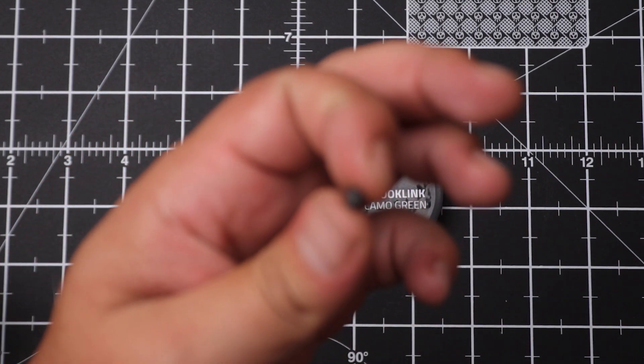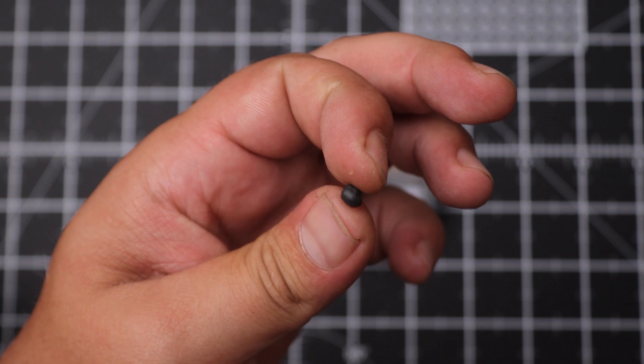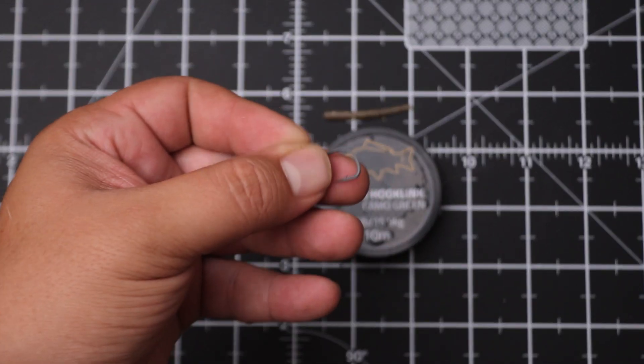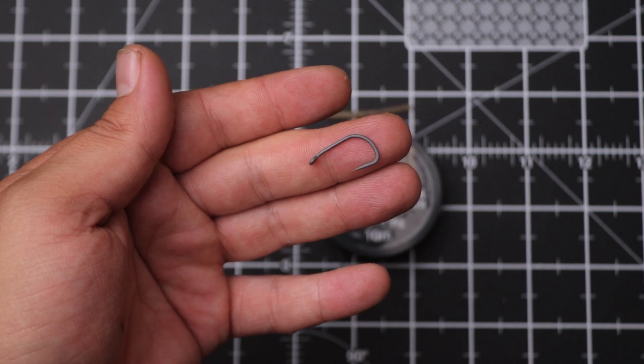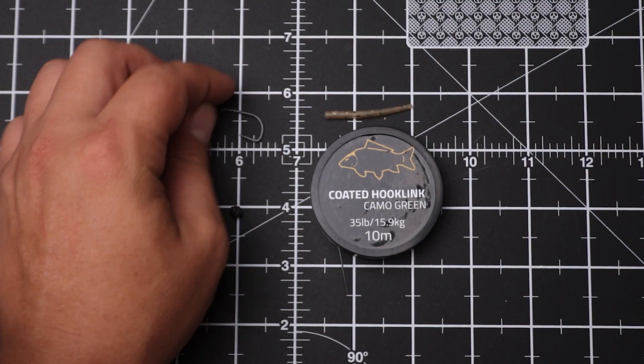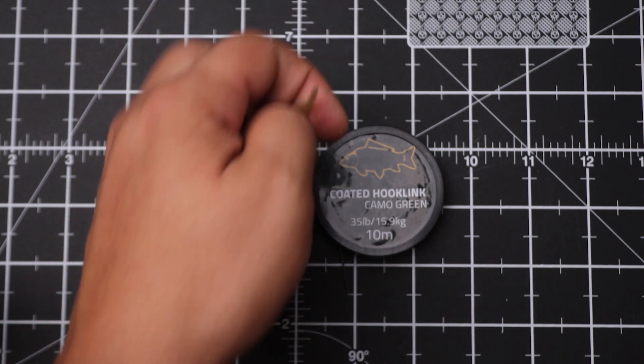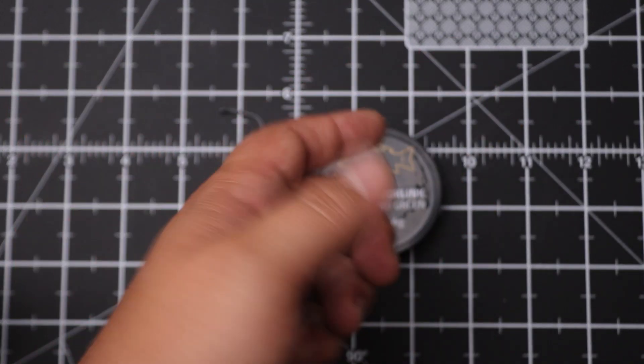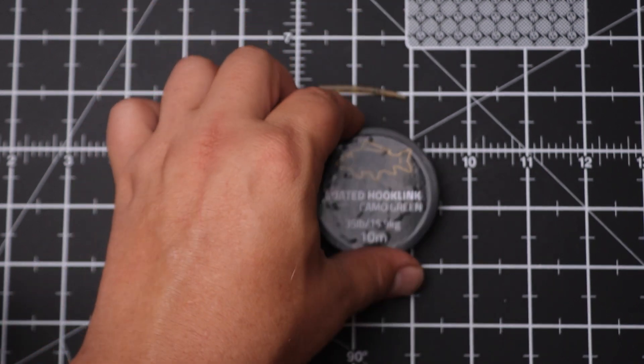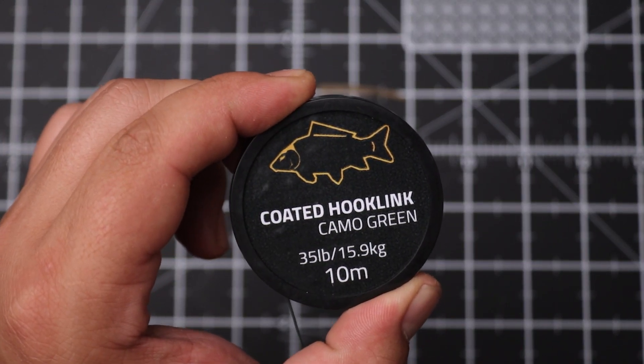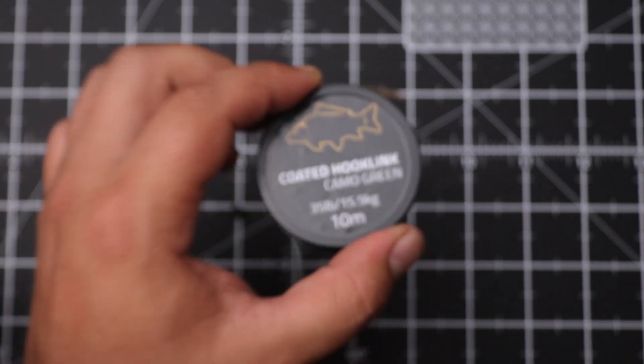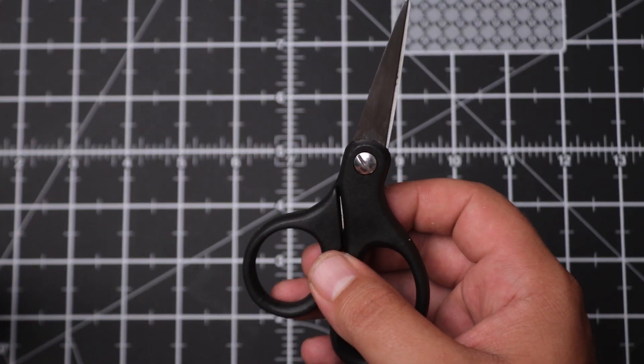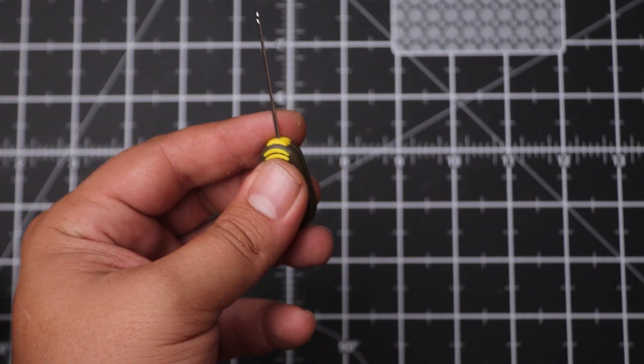You'll need the following items to build this rig. That's going to be some tungsten putty. I'm using a size 4 wide gape hook. You'll need an anti-tangle sleeve and then finally some coated hook link. I'm using the 35 pound 10 meter coated hook link from Tactic Carp. You're also going to need some scissors as well as a baiting needle.